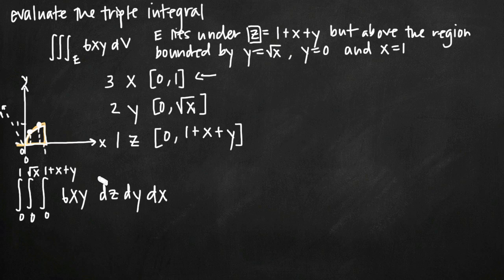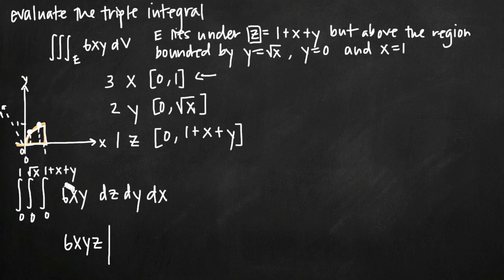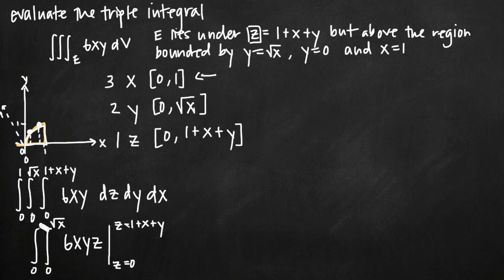We're going to integrate first with respect to z because dz is on the inside. When we integrate with respect to z, we treat x and y as constants — so 6xy is essentially just a constant. Integrating a constant with respect to z just adds on a z, giving us 6xyz. We evaluate that on the interval z equals 0 to z equals 1 plus x plus y. It's important to write 'z equals' to remind ourselves we're plugging in the limits for z, not y or x.